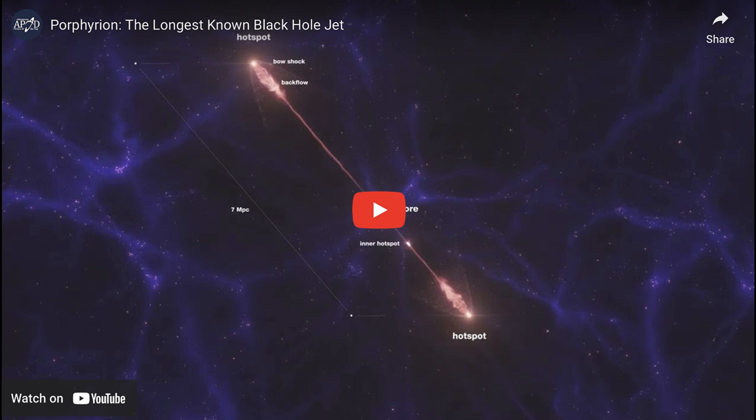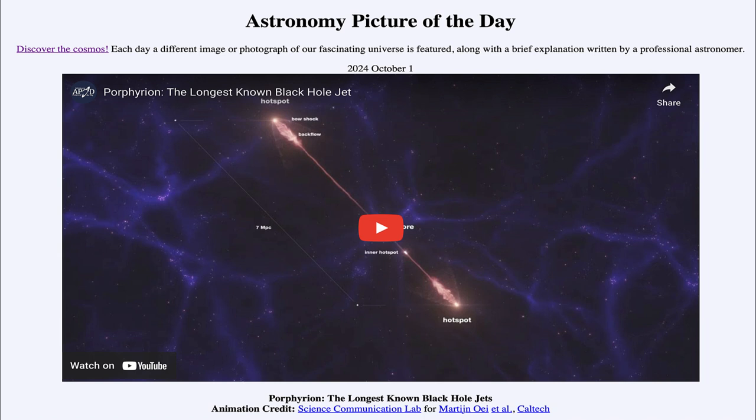So that was our picture of the day for October 1st of 2024. It was titled Porphyrion, the longest known black hole jet. We'll be back again tomorrow for the next picture, previewed to be Big Star Cloud. So we'll see what that is about tomorrow. And until then, have a great day, everyone. And I will see you in class.